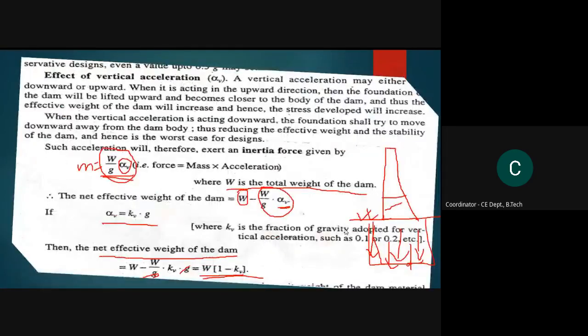Here, KH is the fraction of gravity adopted for horizontal acceleration — analogous to KV for vertical acceleration. The formula KH × γW × H² is similar in structure to the water pressure formula ½ × γW × H².